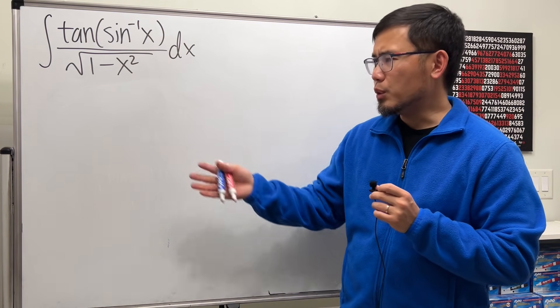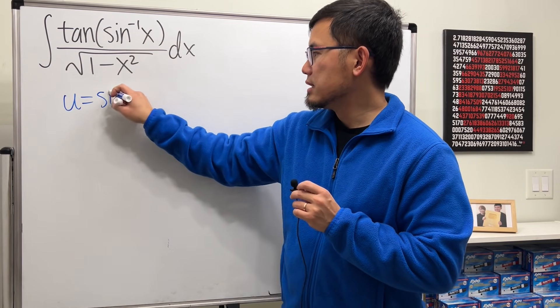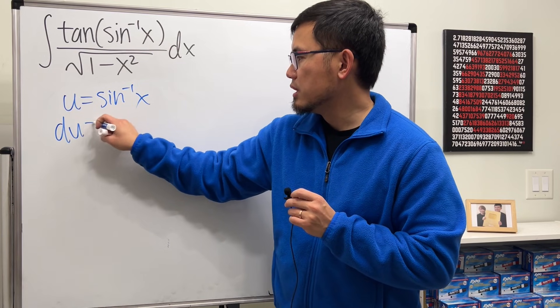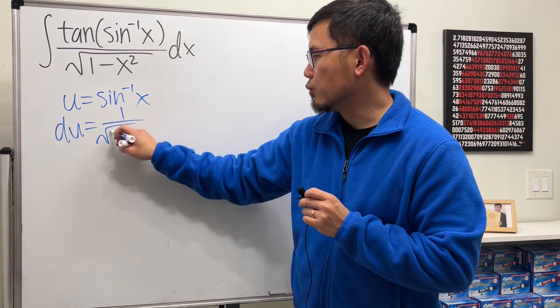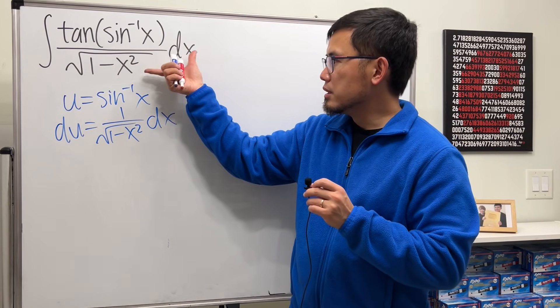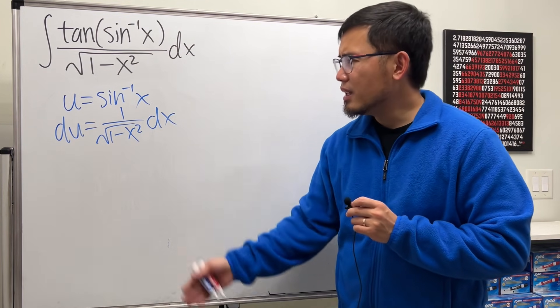I will show you the steps though. First, you let u equal to the inside, sine inverse of x, and then differentiate this. You see we get 1 over square root of 1 minus x squared, and this is very nice because these two together will give us the du right away.